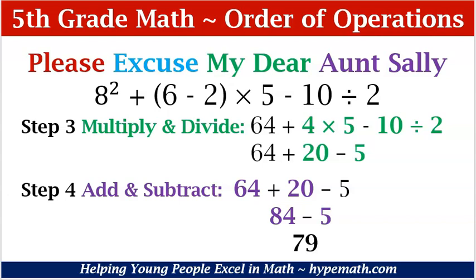Now our problem — and remember where we started? It looked gargantuan, right? But now we have 64 plus 20 minus 5. Lastly, we are going to tackle our addition and subtraction. We have 64 plus 20; we calculate that first, which is 84, and then subtract 5. 84 minus 5 is equal to 79, and we are done. So 8 squared plus, in parentheses, 6 minus 2, times 5 minus 10 divided by 2 is equal to 79.